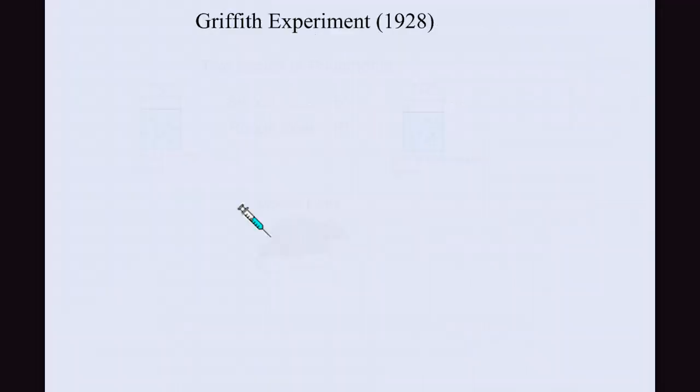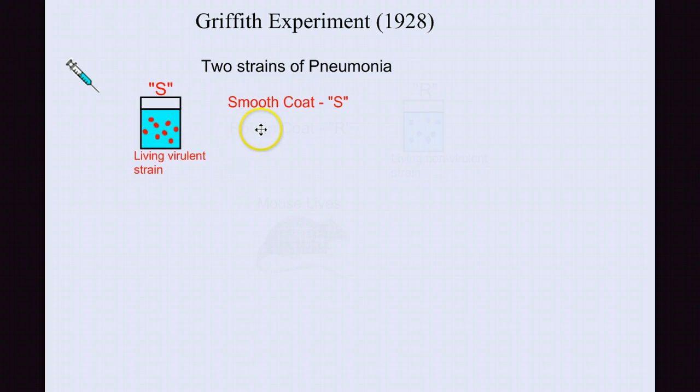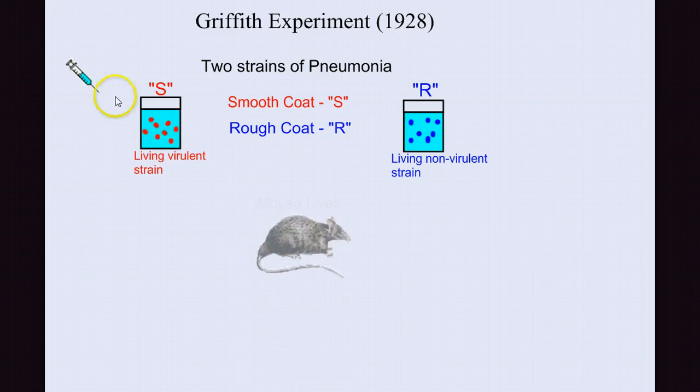So we know there's a physical basis of heredity from Mendel, and we know that something's being passed from parent to parent, but the question is, what is it? And that brings us to Griffith's experiment. In 1928, Frederick Griffith was working with two different strains of pneumonia. The smooth-coated pneumonia, the S-strain, and the rough-coated, the R-strain. When he would inject a mouse with the R-strain bacteria, the mouse would live.